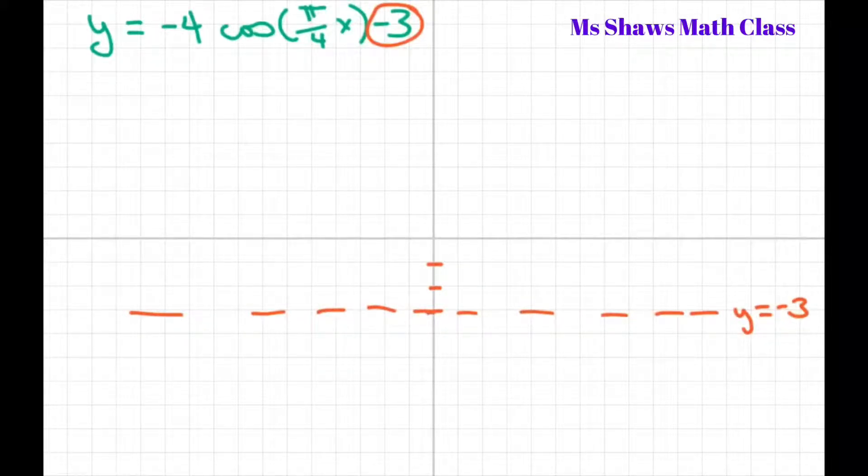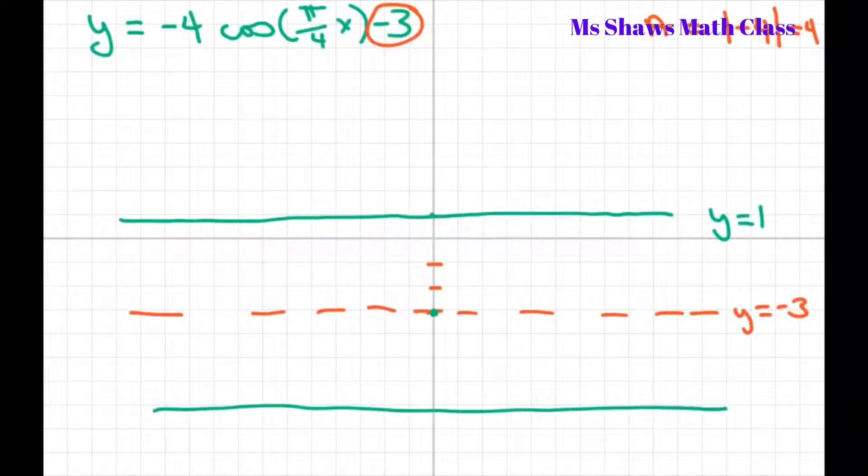Now, our amplitude is absolute value of negative 4, which is 4. So, when I graph this, I'm going to be going from my new center line up 4, which would be y equals 1, and down 4, which is y equals negative 7.